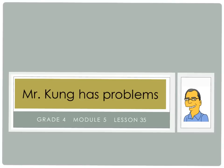Hello, and welcome to another episode of Mr. Kung Has Problems. Tonight we're working on Module 5, Lesson Number 35. In this new part of Module 5, we are going to be working with multiplication of fractions. In this first lesson, Lesson 35, we are going to represent the multiplication as repeated addition and look at the associative properties of doing this kind of multiplication with fractions.